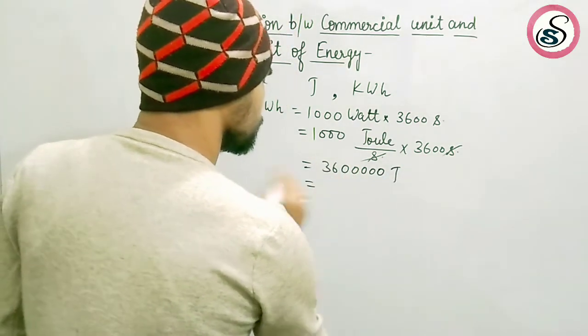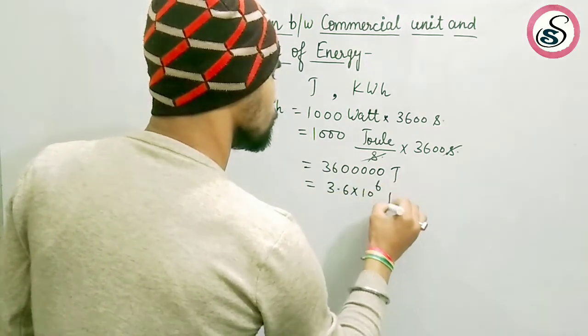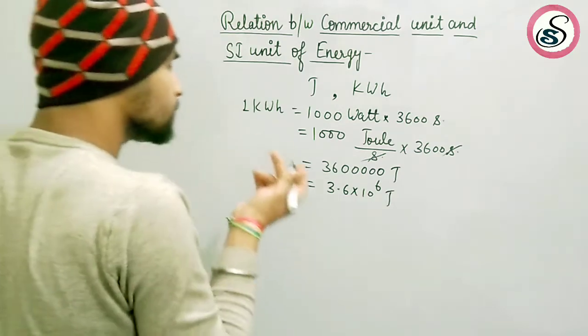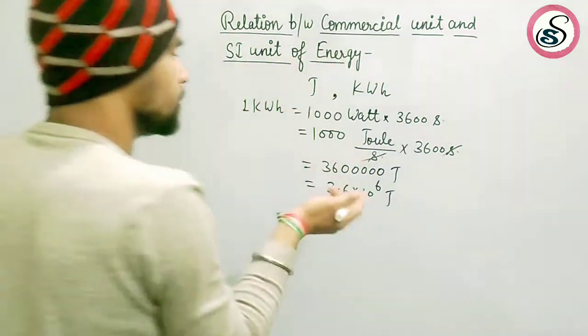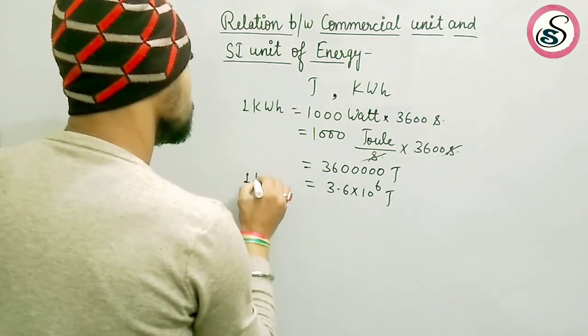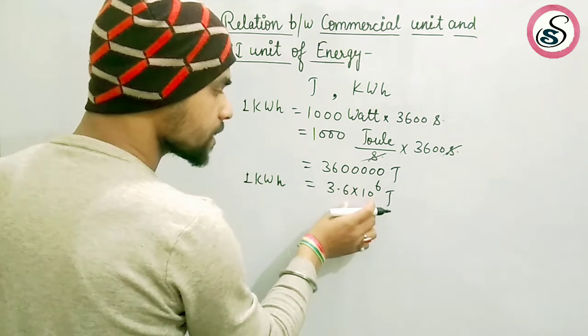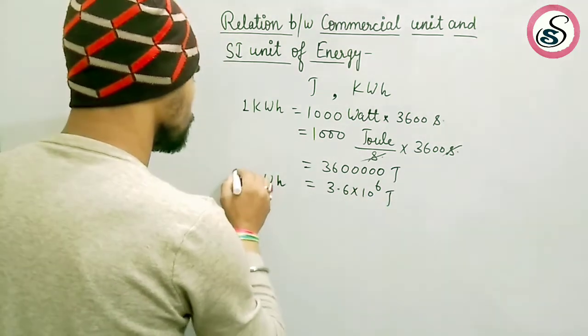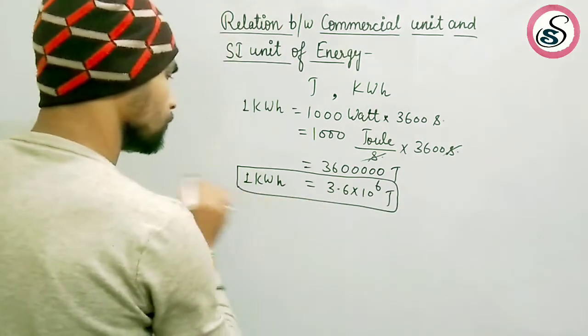it as 3.6 × 10^6 Joule. So what is the relation between commercial unit and SI unit of energy? That is, one kilowatt hour is equal to 3.6 × 10^6 Joule.